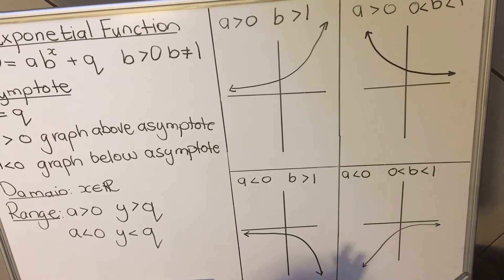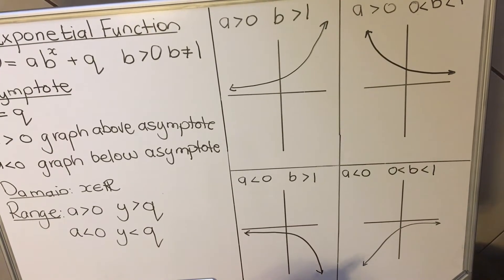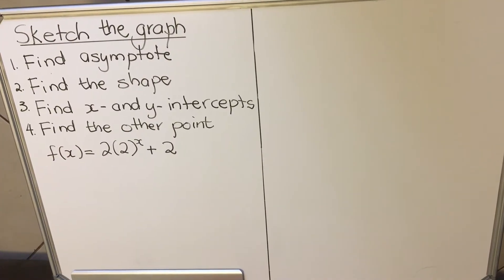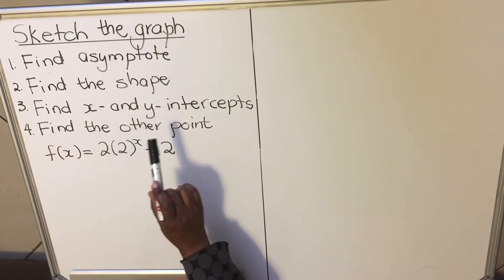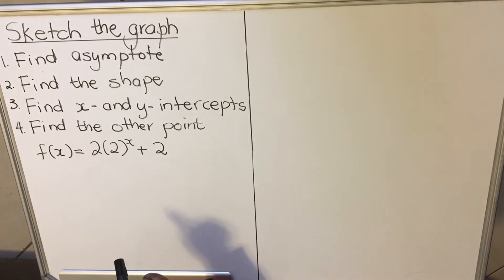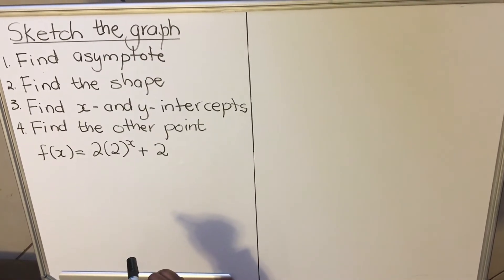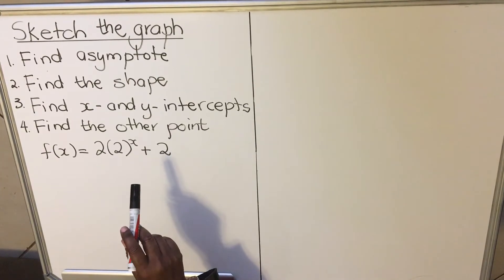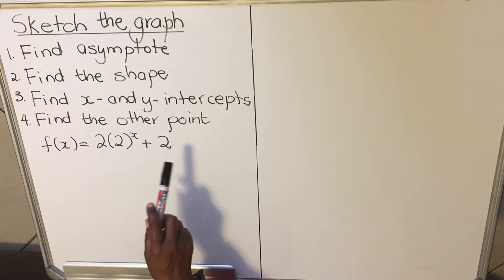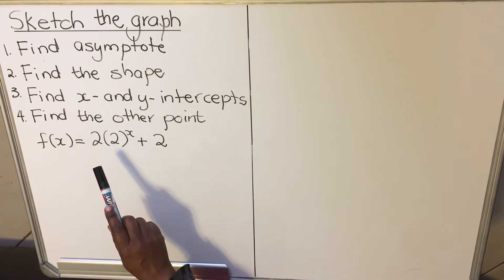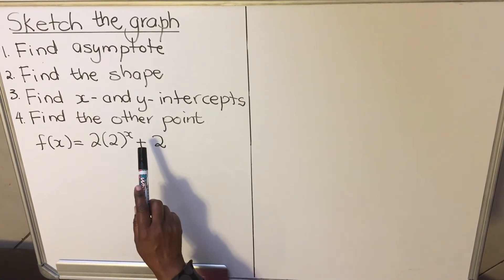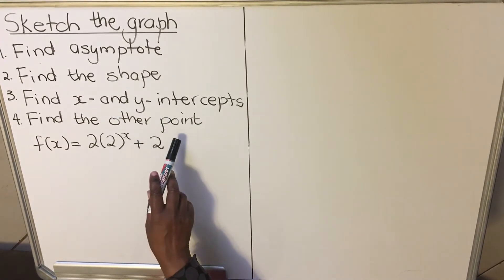Grade 10s, it is important to memorize these shapes before you even start drawing the graph. Let's look at the steps we follow when sketching the exponential graph. Step 1: find the asymptote from the equation and write it as an equation — something equals something. Step 2: find the shape. Step 3: find the x and y intercepts — not every graph has an x-intercept, so find the shape first. Step 4: find another point, which also depends on the shape of the graph.